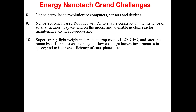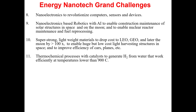By the use of nanotechnology, we can have super strong lightweight materials to reduce the cost of transport to low-Earth orbit, geostationary orbit, and the Moon by greater than 100 times, to enable huge but low-cost light-harvesting structures in space, and to improve efficiency of power plants. Similarly, thermochemical processes with catalysts can generate hydrogen from water efficiently at temperatures lower than 900 degrees centigrade.